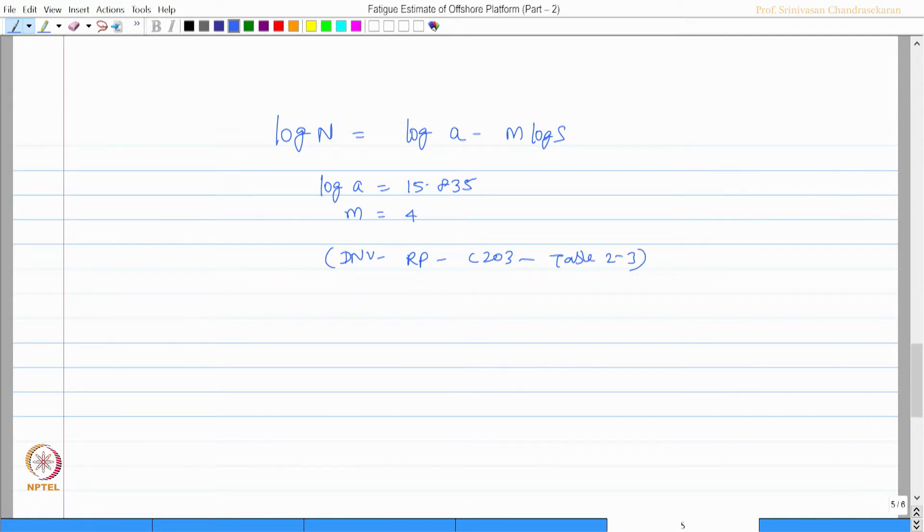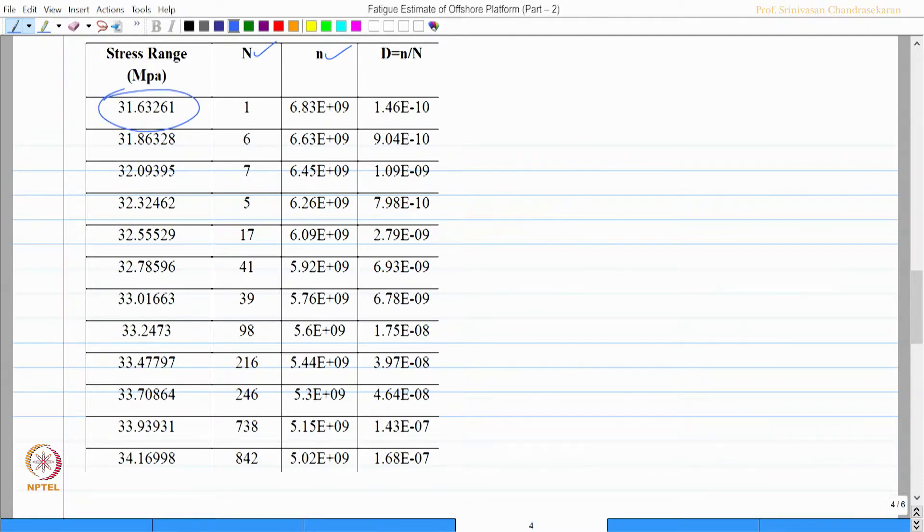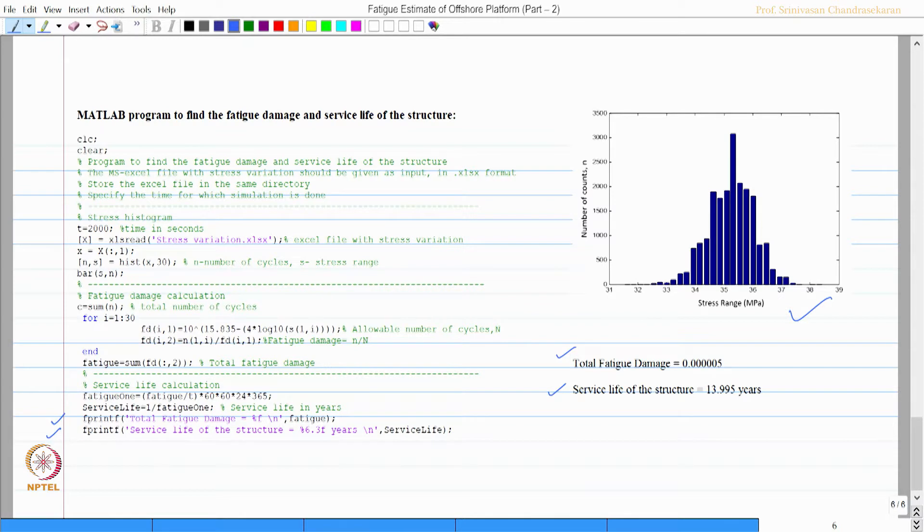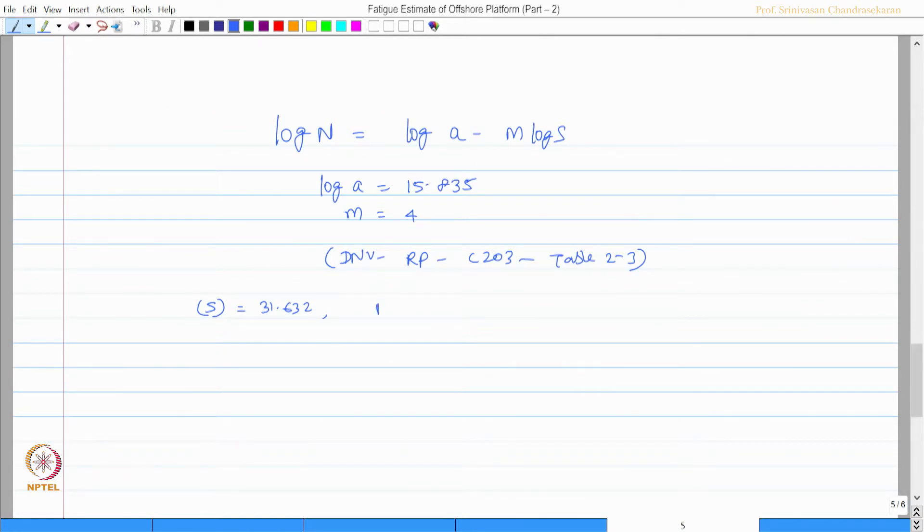Let us say for example, one specific value the stress range is 31.632. For 31.632 the capital N value is computed from the above equation which is log n is equal to 15.835 minus 4 log 31.632. In this case it is log to the base 10.